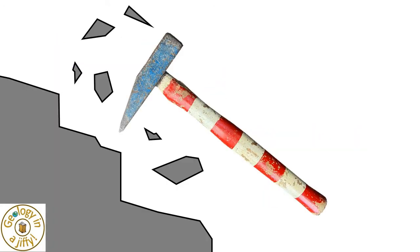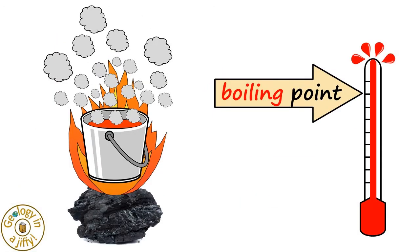This gives allotropes different physical and chemical properties such as their hardness, melting points, boiling points and reactivities.